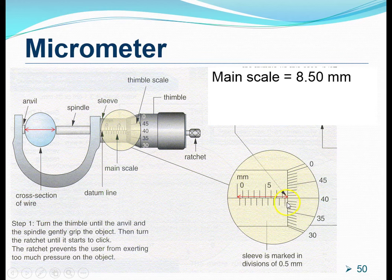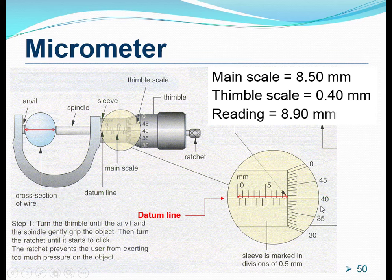Now what happens to the balance of the length that has not been read yet? The balance of this length can be found by looking at the thimble and the datum line. This balance is found by looking for a mark on the thimble that meets the datum line on the sleeve. For this particular example, the mark happens to be the number 40 marking. To get the thimble scale, we simply divide the marking by 100. So, 40 divided by 100 gives us 0.40 millimeters.